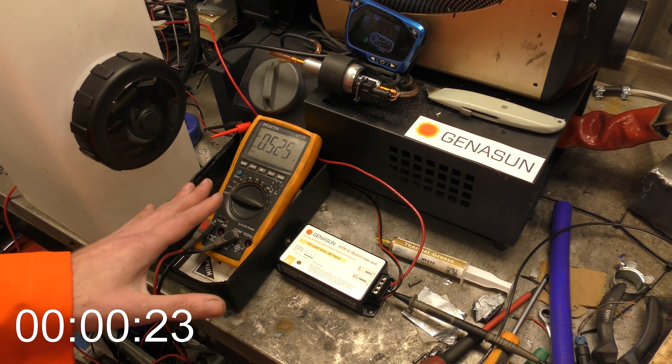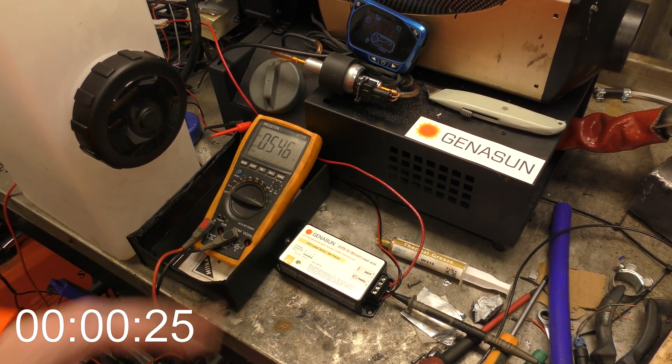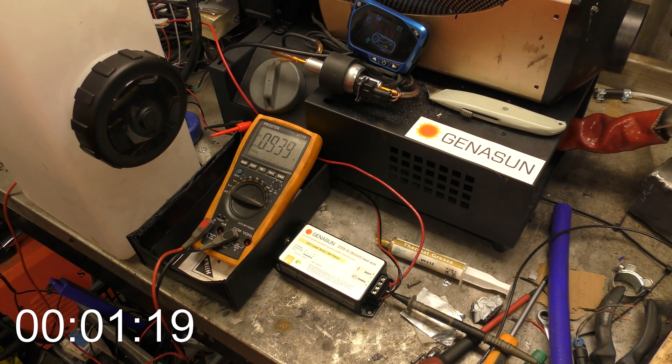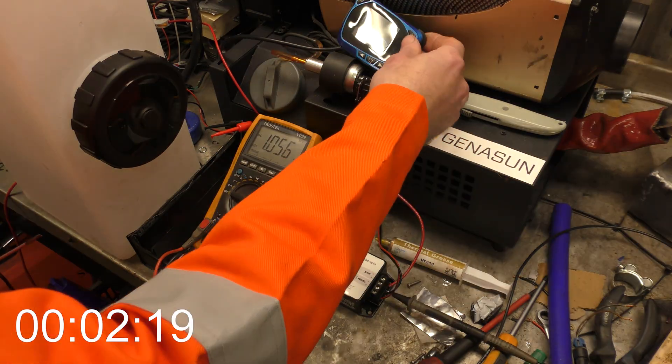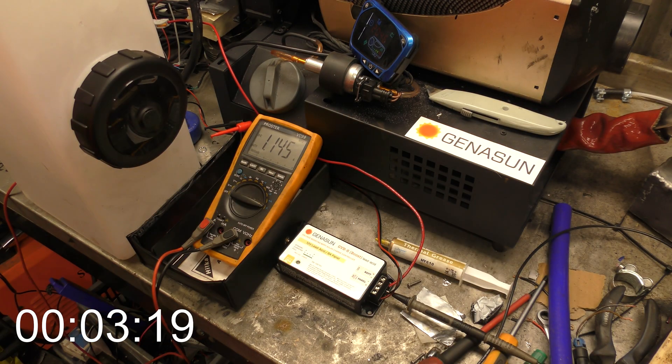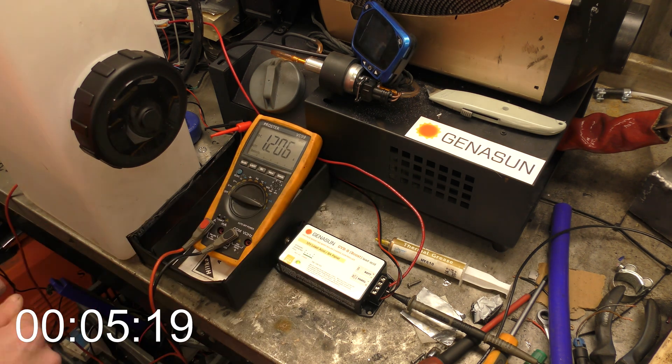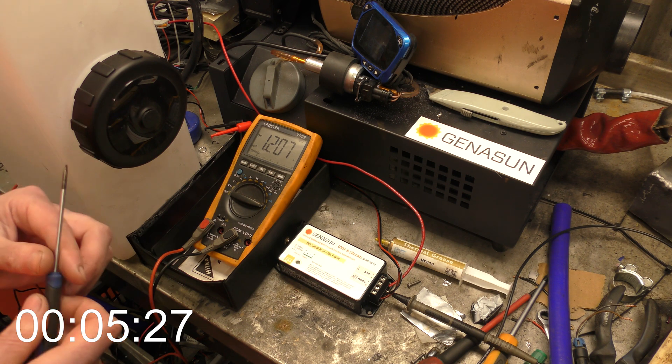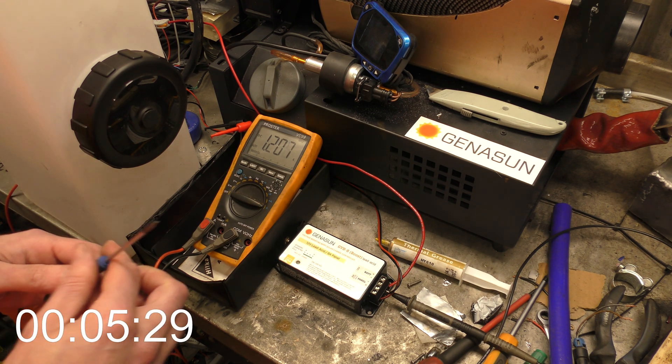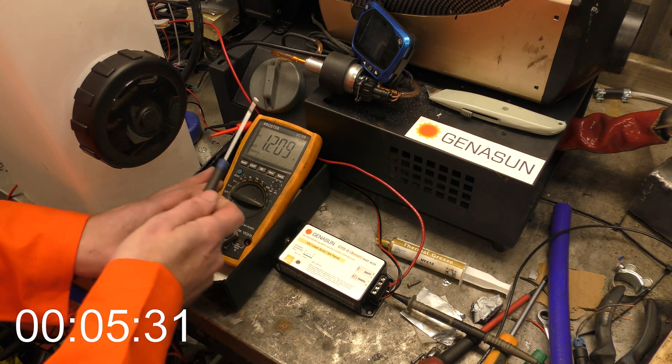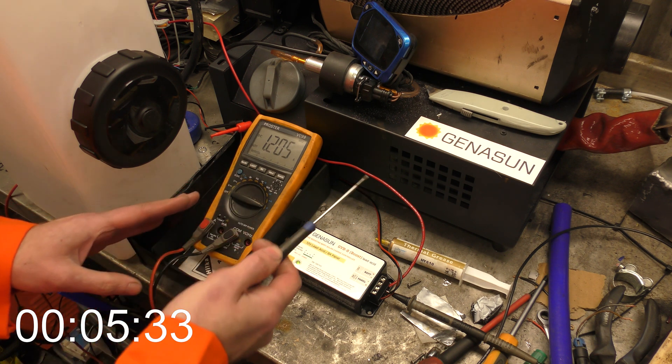Okay, we've now surpassed the current draw of the water pump. We've been running for a few minutes now, and the Jenison is currently putting in 1.2 amps back at the battery.